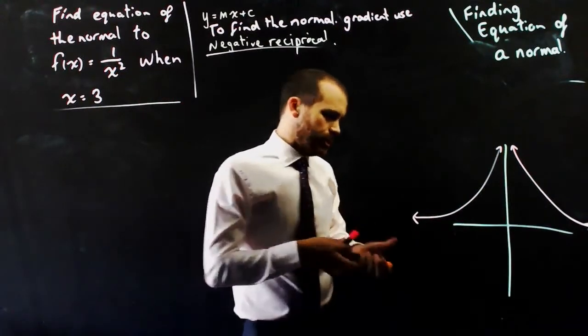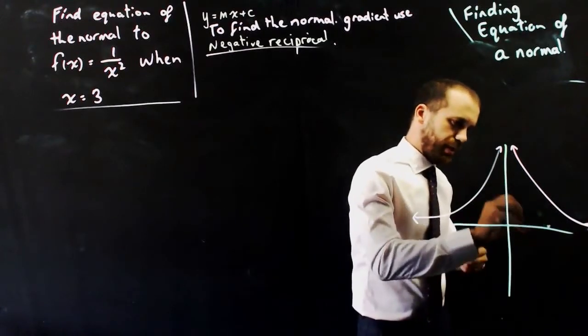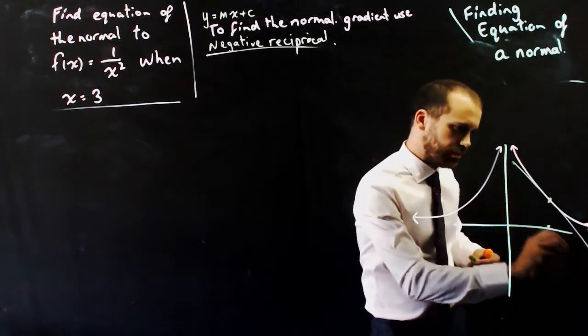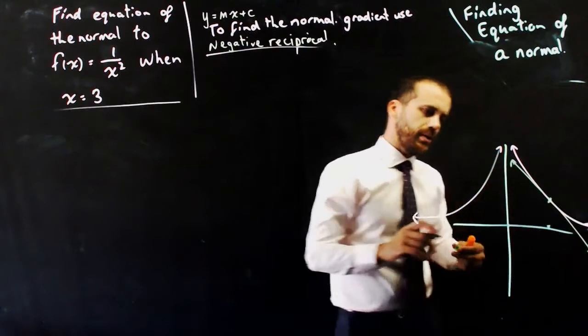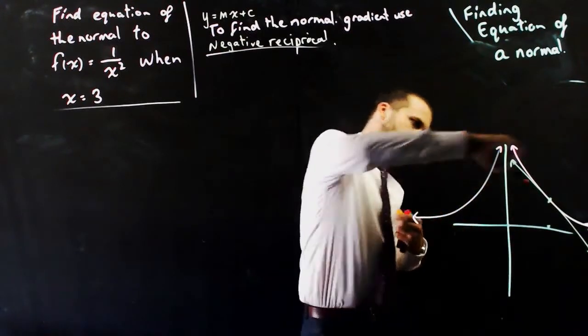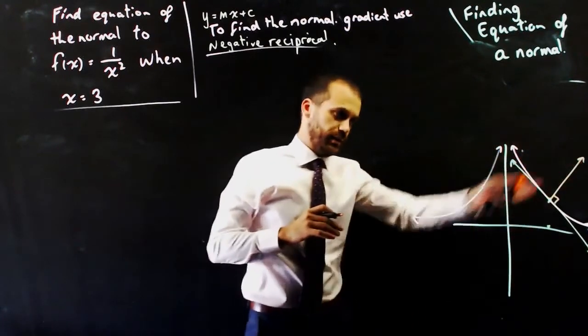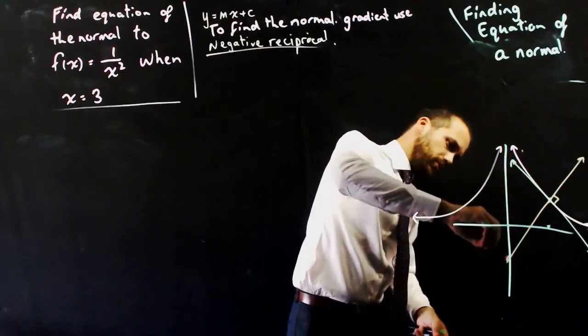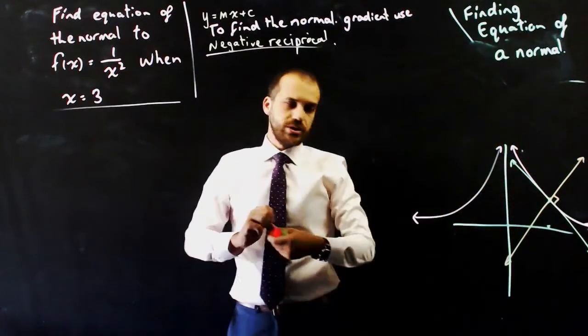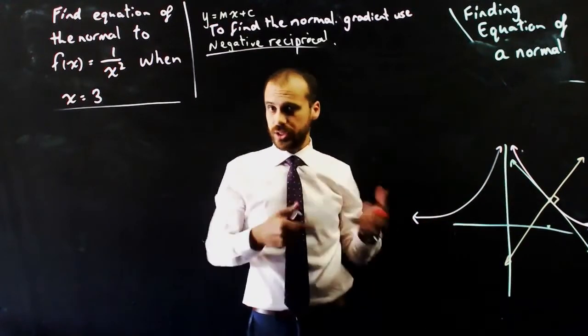So what's it going to look like? Well, it's going to look something like this. x equals three is happening at about there. The tangent would look like this, and the normal would obviously be off into space this way somewhere, 90 degree angle there. So we're trying to find the equation of the normal. It's the same steps for finding the tangent, we just need to use that negative reciprocal.